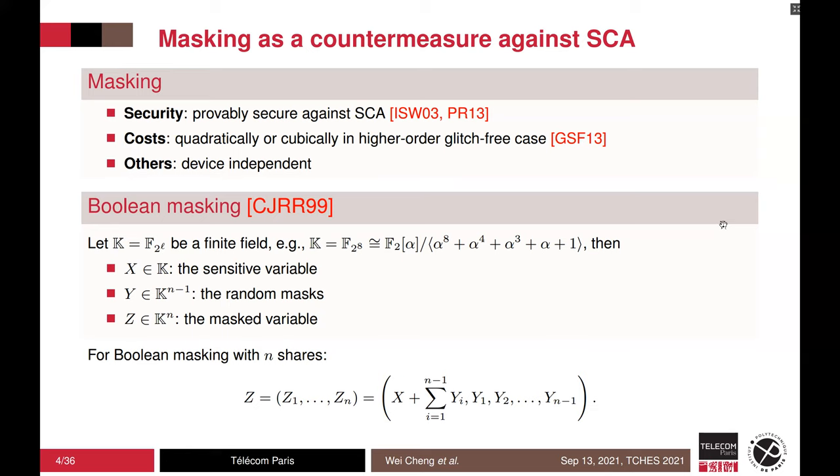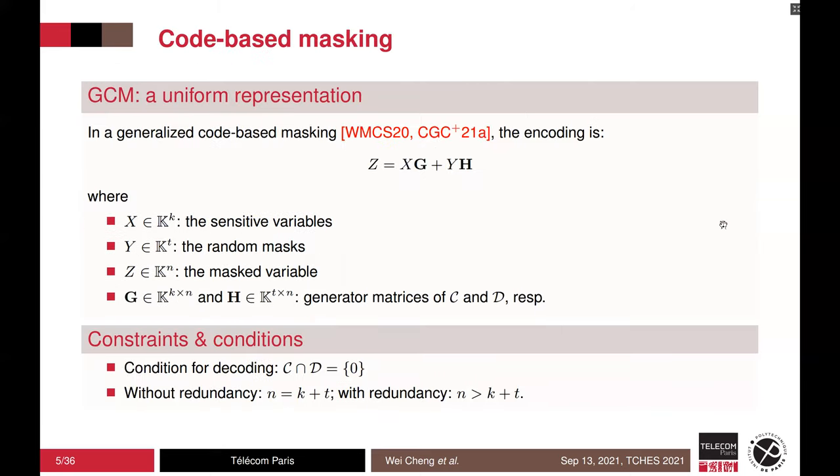Typically, in Boolean masking, let X be the sensitive variable, Y be the mask, and Z be the masked variable. Then, given n shares, its encoding is as follows. The first share is constructed by XOR with the secret, the sensitive variable, and all other masks.